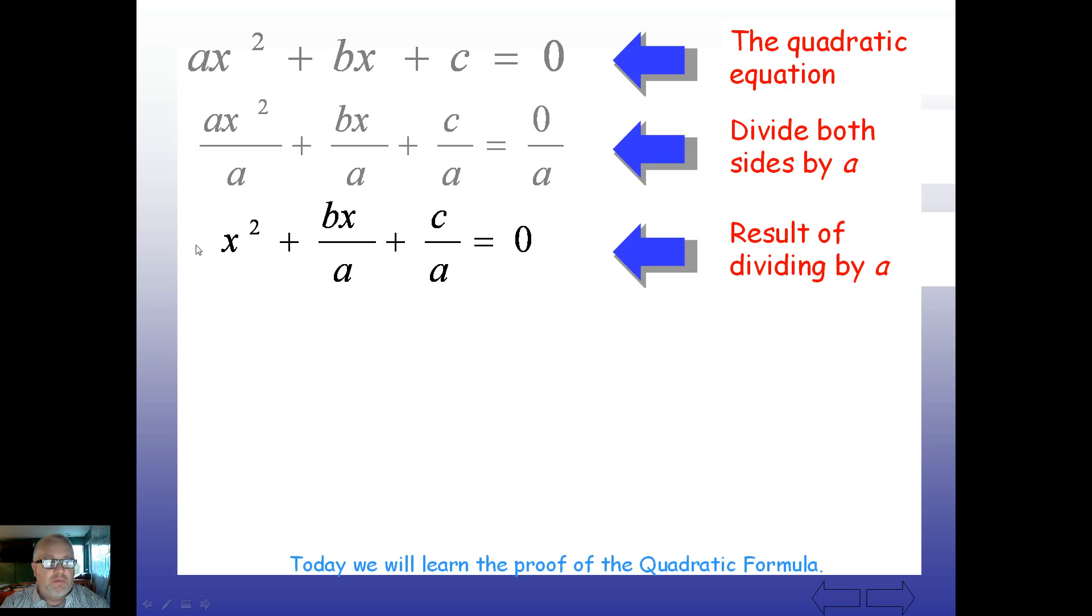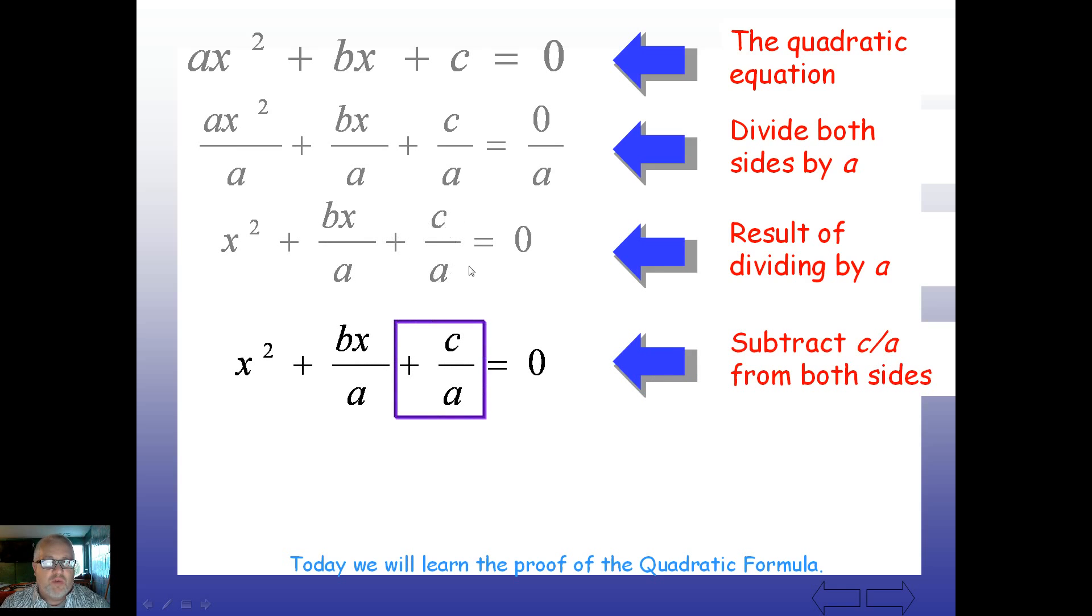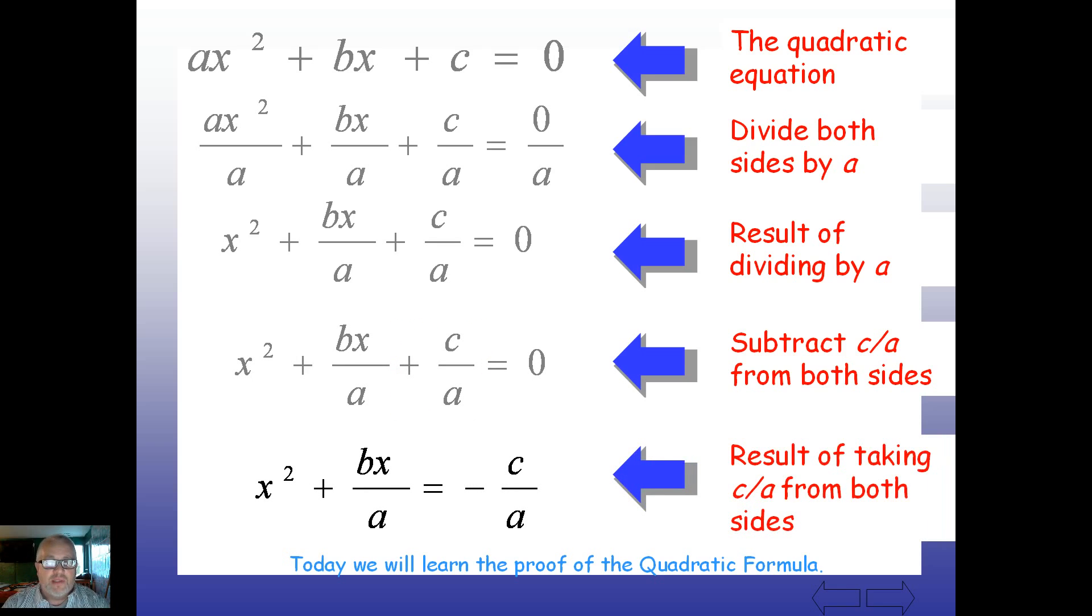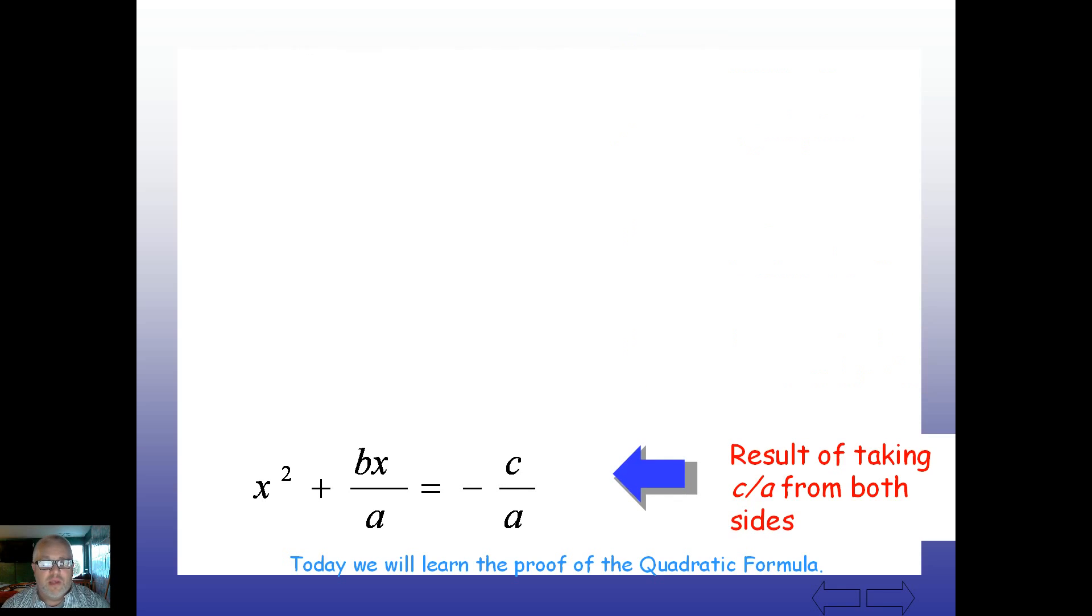So this is the result here, dividing by a. These a's cancel, they reduce down to one, which disappear, and now we have this. Now what's next? Next thing is I'm going to get rid of this plus c over a. That's got to be moved over. Remember we talked about completing the square here, we're going to move and move the c over to the right hand side to make room for our perfect square. So, we're going to subtract c over a from both sides. Because we've got positive c over a, we're going to subtract it from both sides. So let's do that. Remember that zero minus anything is just going to be that negative number there. So we get negative c over a, and this c over a disappeared. Alright, so here's where we are. This is a result of taking c over a from both sides.